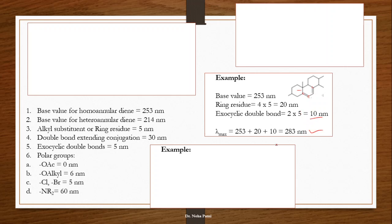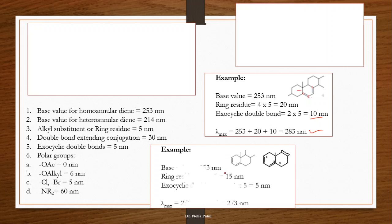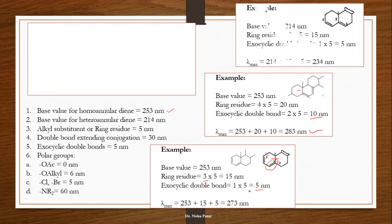Moving quickly to the next example: the base value is for a homoannular diene. The ring residues — substituents — are three, and there is one exocyclic double bond connected to this ring, contributing 5 nm. That is how you calculate the lambda max for this structure.